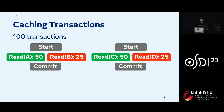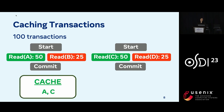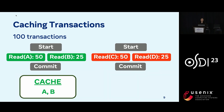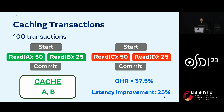Most current caching policies want to maximize object hit rate, so they'll choose to keep A and C in cache since these give the most object hits, resulting in an object hit rate of 50%. However, we actually don't see any latency improvement for any of the transactions because we need to wait for B and D to be pulled from disk. On the other hand, if we cache A and B, our object hit rate goes down to 37.5%, but we now see a latency improvement on 25% of our workload. This explains the poor results we saw with LRU and LFU on the TauBench workload, since these algorithms weren't taking cache contamination into account.